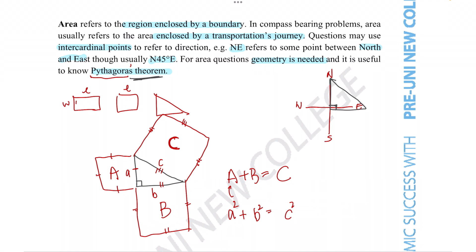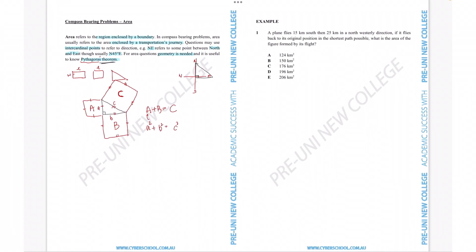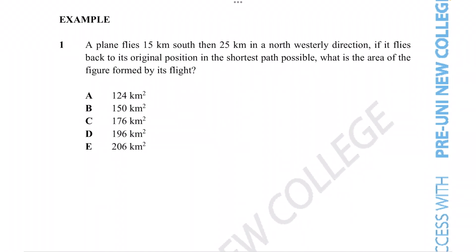So we'll test our understanding here. A plane flies 15 kilometres south, then 25 kilometres in a northwesterly direction. It flies back to its original position in the shortest path possible. What is the area of the figure formed by its flight?